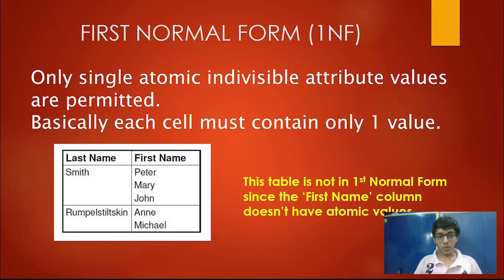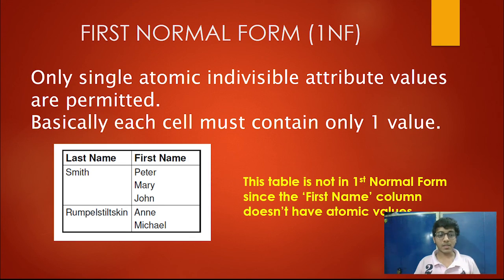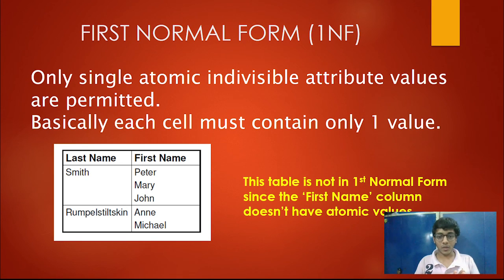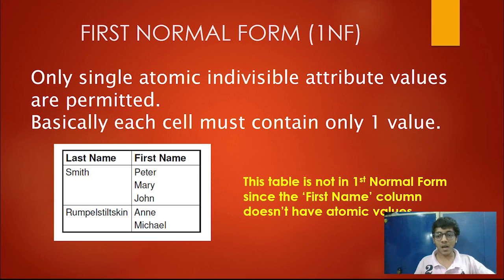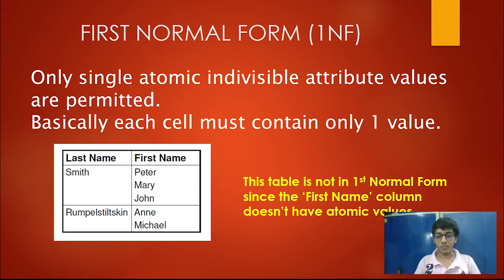The first normal form (1NF) allows only single atomic, indivisible attribute values in one cell. Every cell should contain only a single value, and every column must have the same type of attributes. Normally most tables are generally already in 1NF form, so in examinations you usually have to convert tables to other higher forms, not to 1NF. But some tables are not in 1NF and need to be changed.